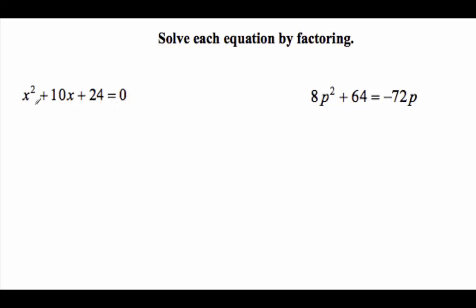Solve by factoring, so we're going to use zero product property. This one is easy Australian because I have a leading coefficient of 1. Two numbers that multiply to 24 and add to 10: I'm going to go with 6 and 4. So then set each of those equal to 0. x equals negative 6 or x equals negative 4.